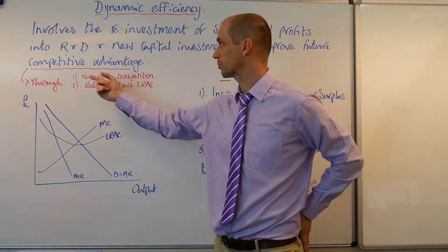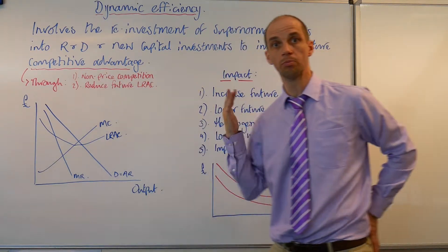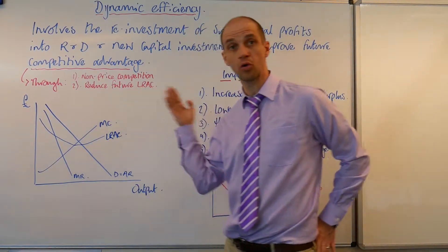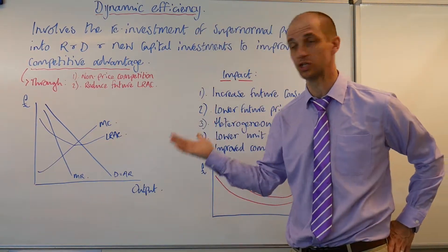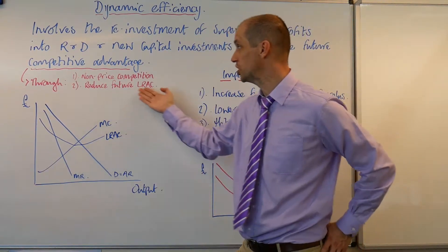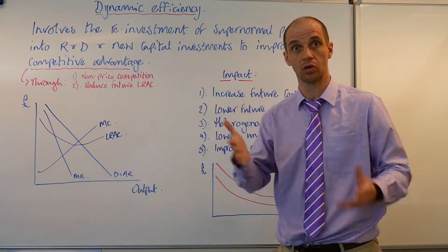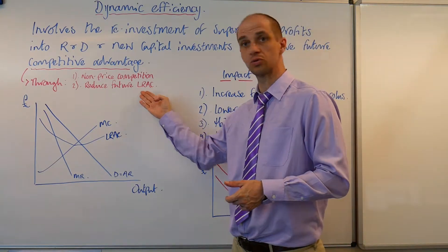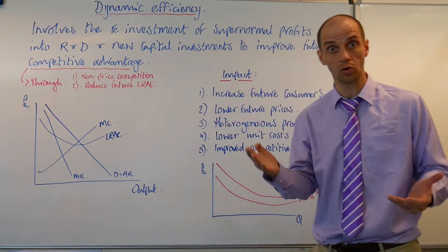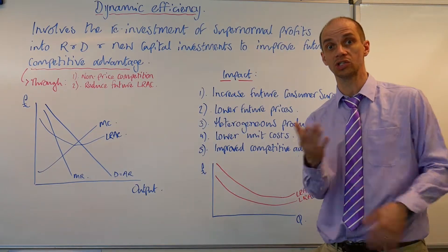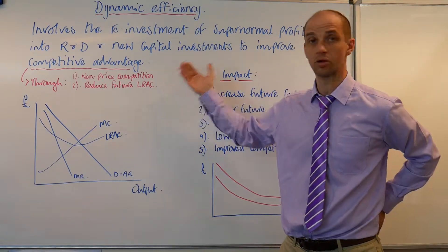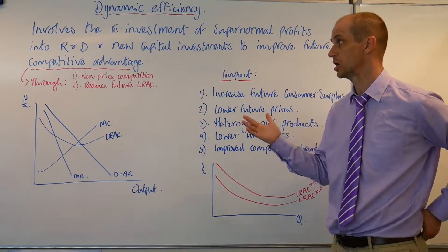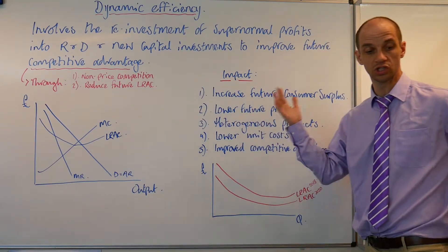Firstly, through non-price competition, and secondly, through price-based competition by reducing future long-run average cost. So if you're able to reduce your long-run average cost in the future, then that means you can offer lower prices to your consumers.